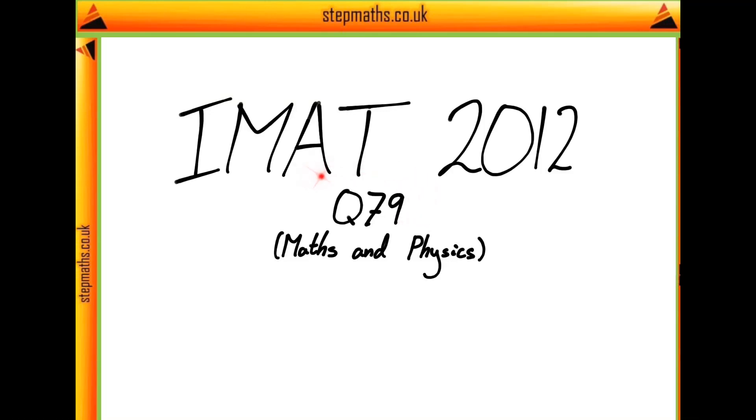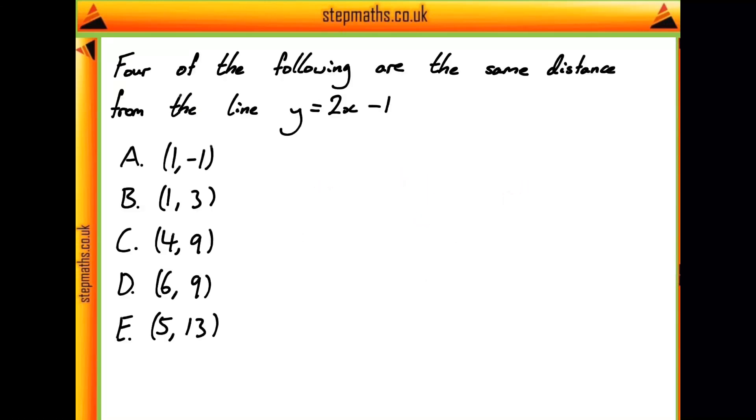Here we're going to look at question 79 from the IMAX 2012 paper. So in this question, we're given the equation of a line, y equals 2x minus 1.